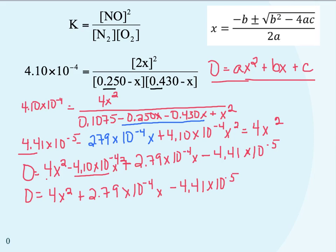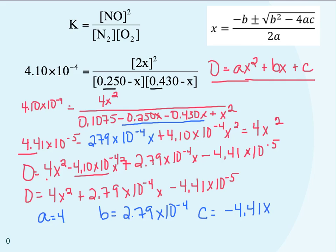Now the equation matches the standard quadratic format. I can identify: a = 4, b = 2.79×10⁻⁴, and c = −4.41×10⁻⁵. Remember to carry the minus sign—because our equation has a subtraction there, c is actually negative. Now that we know these values, we can plug them into the quadratic equation and solve for x.